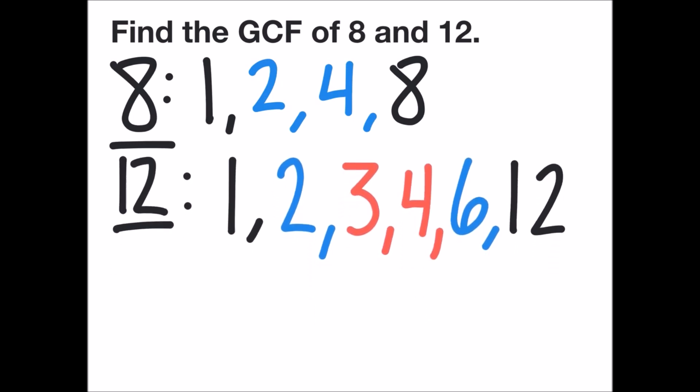Now I need to go through each list of factors and see what is the highest number found in both lists. I can see that 4 is the highest number in both lists, so the greatest common factor for 8 and 12 is 4.